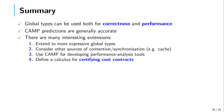To summarize, we have seen how global types from the theory of multiparty session types can be used not only for correctness, but also for reasoning about the performance of a system. CAMP predictions are generally accurate, and in the cases where they are not, it is likely due to other sources of contention that we can consider as interesting extensions for our theory and tools. We can also consider more expressive global types, using the CAMP theory for developing performance analysis tools, or even a new calculus for certifying cost contracts. The amount of future work that can derive from CAMP is quite wide and quite interesting.